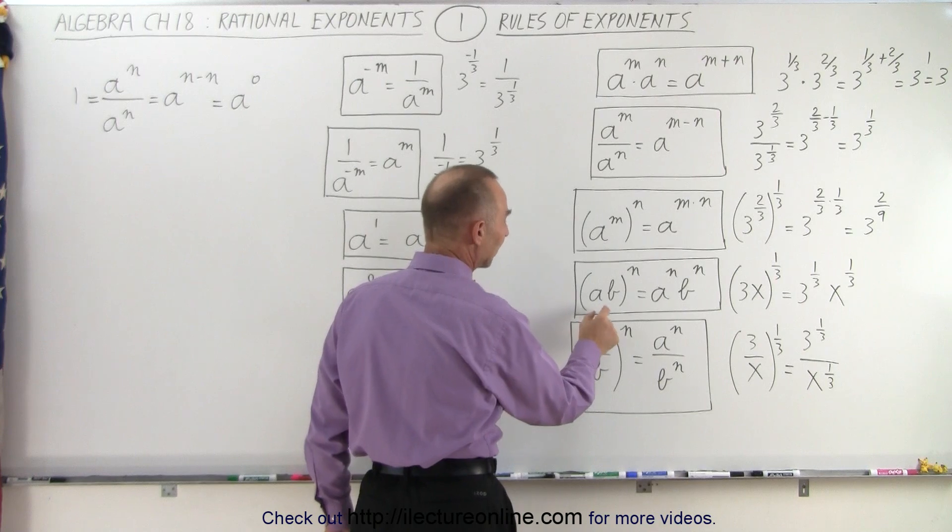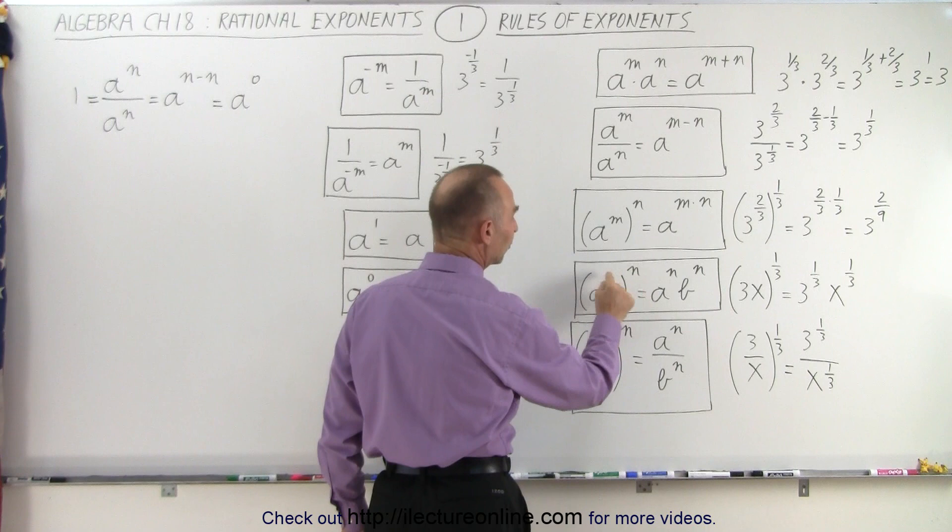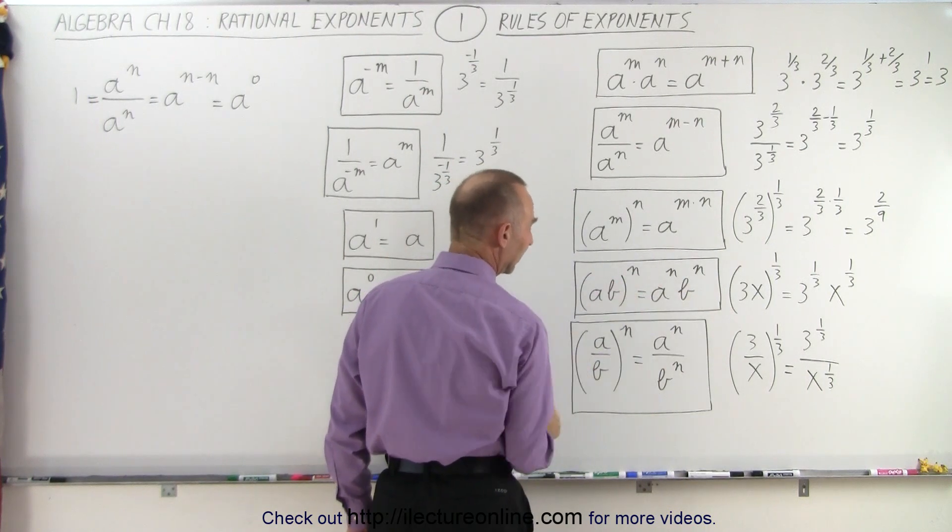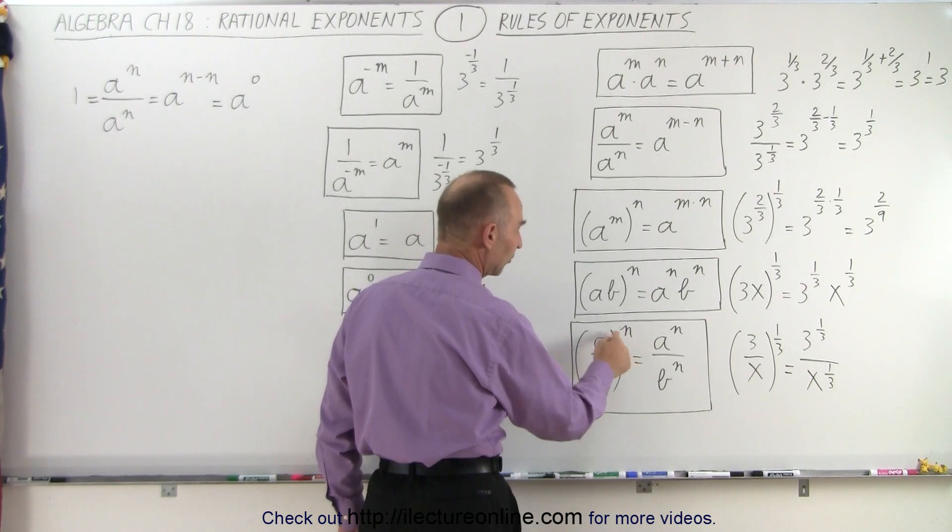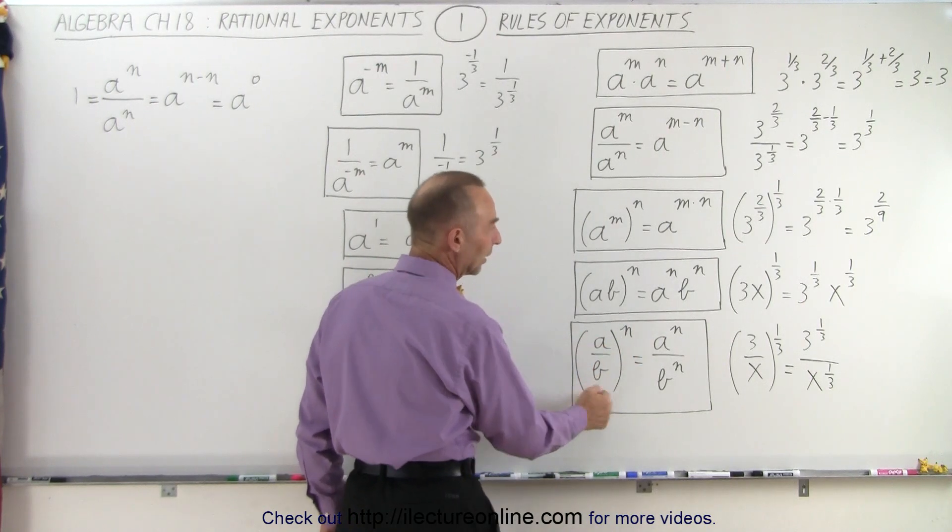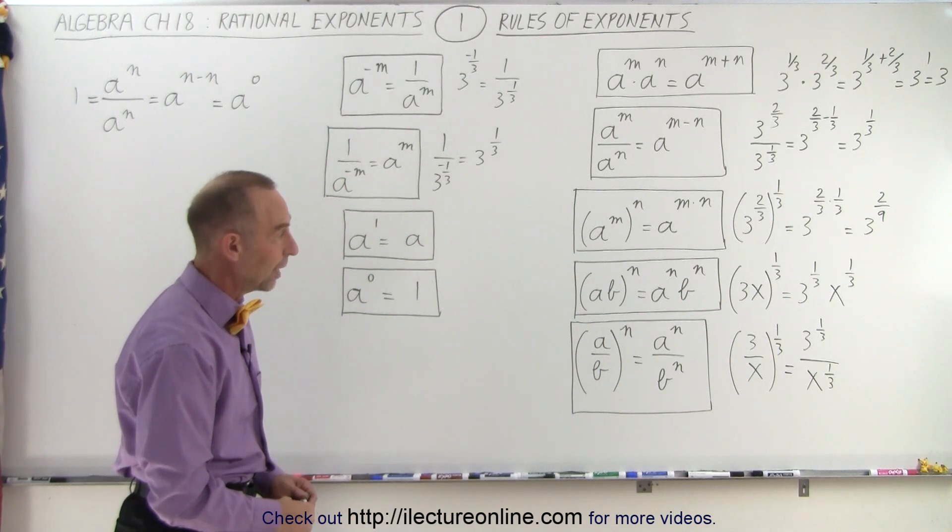Here also, when we have a times b to the n power, when this is in parentheses like this, the n applies to both the a and the b, so we can write it like this. Or if it's a over b, again, the n, the exponent, applies to both the numerator and the denominator. And so when we have fractional or rational exponents, you can see it works the same way.